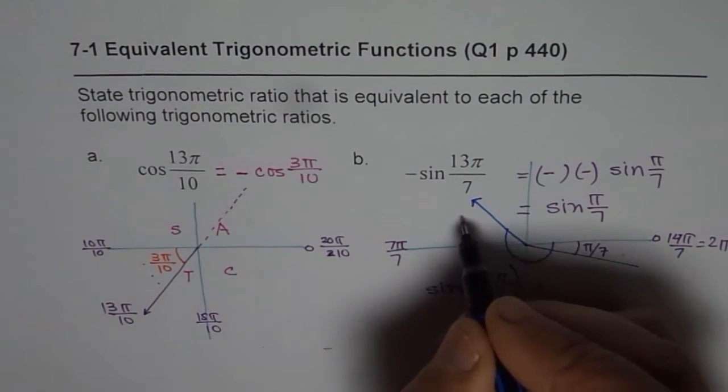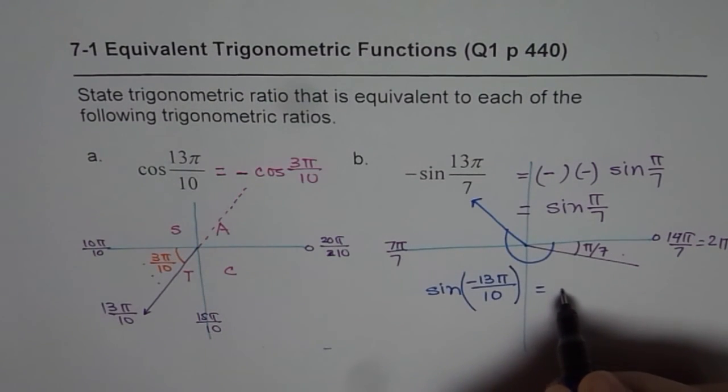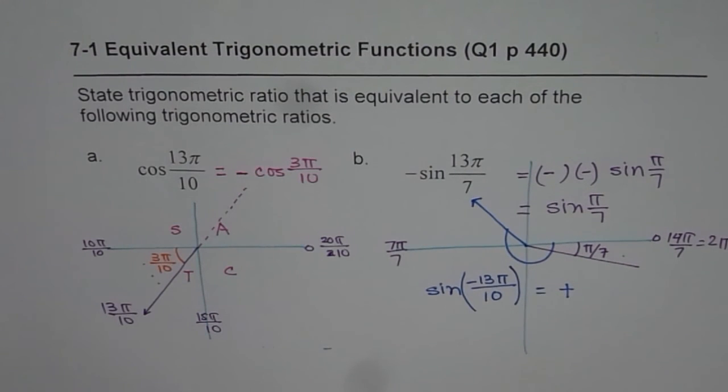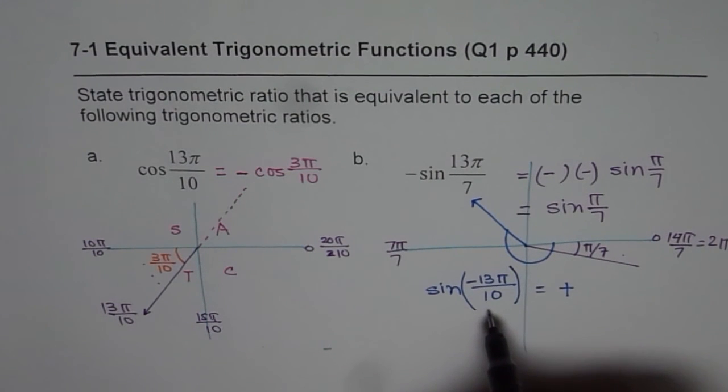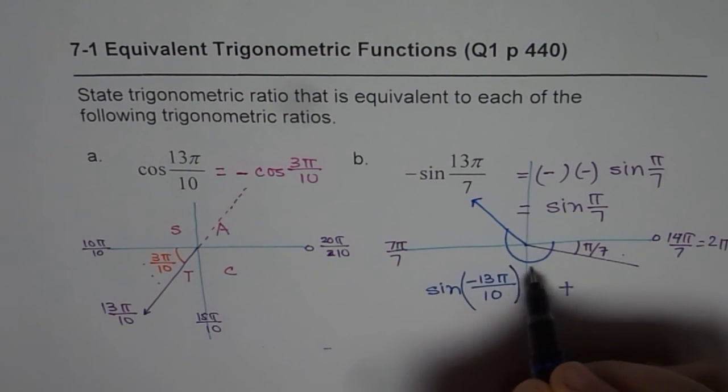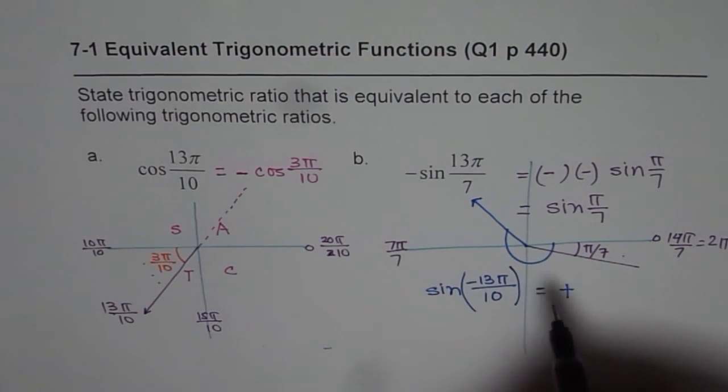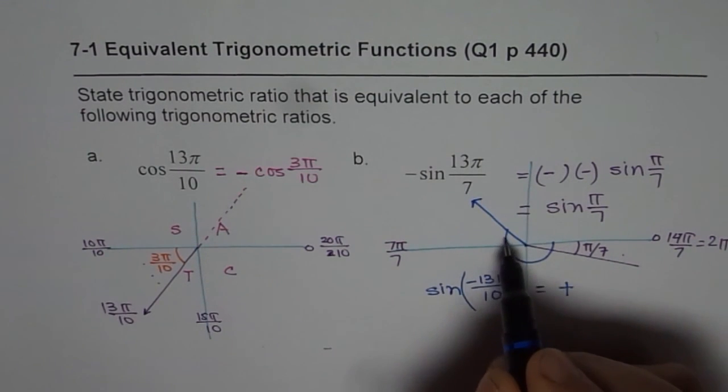So we are expecting a positive value, correct? So write positive here. Now, what is the acute angle? In this particular case, well, I should have drawn it here. In any case, in this particular case, we are looking into 10π by 10 here. Let me rewrite. So this angle is 3π by 10, correct?